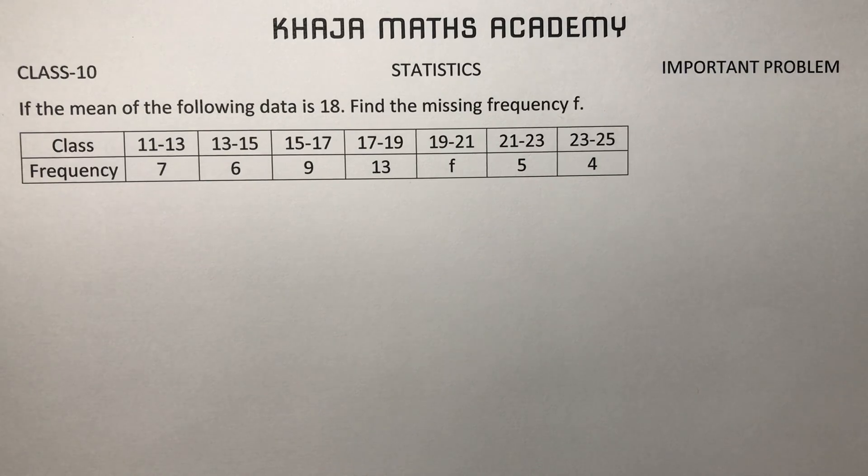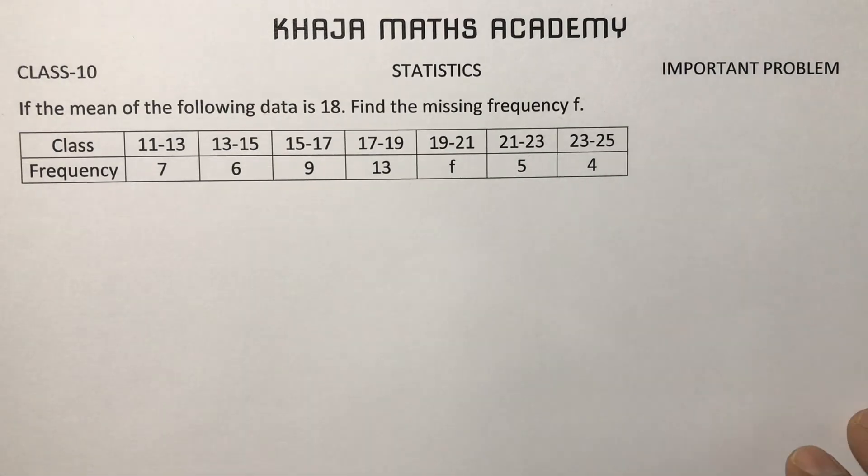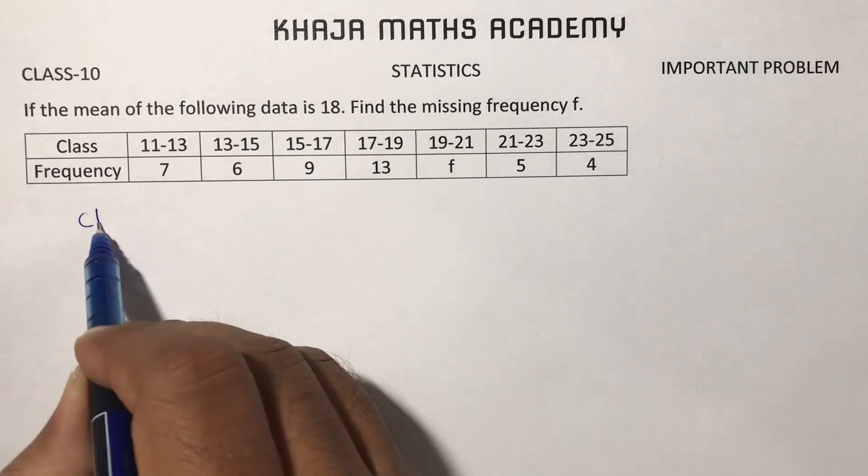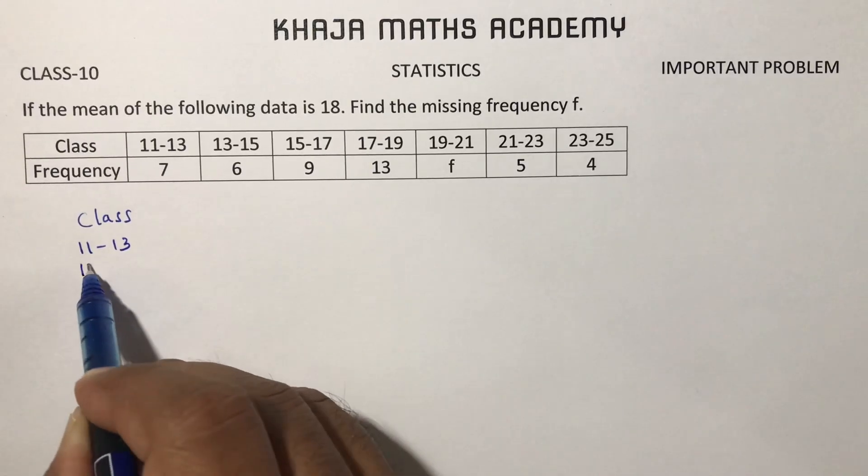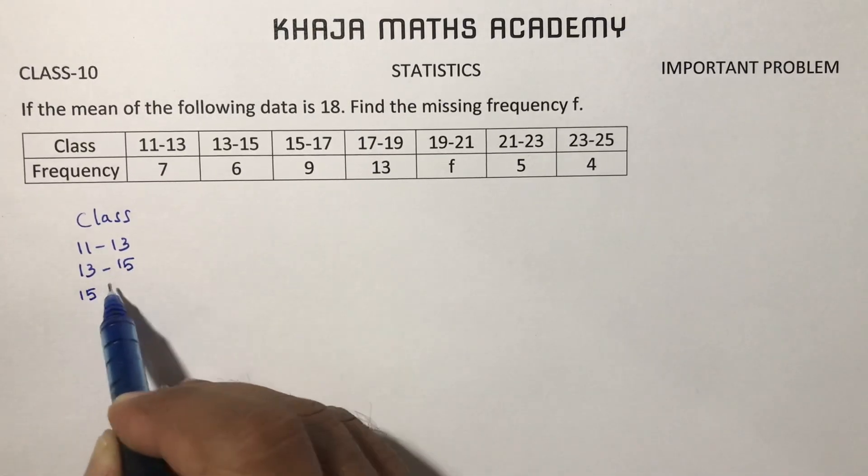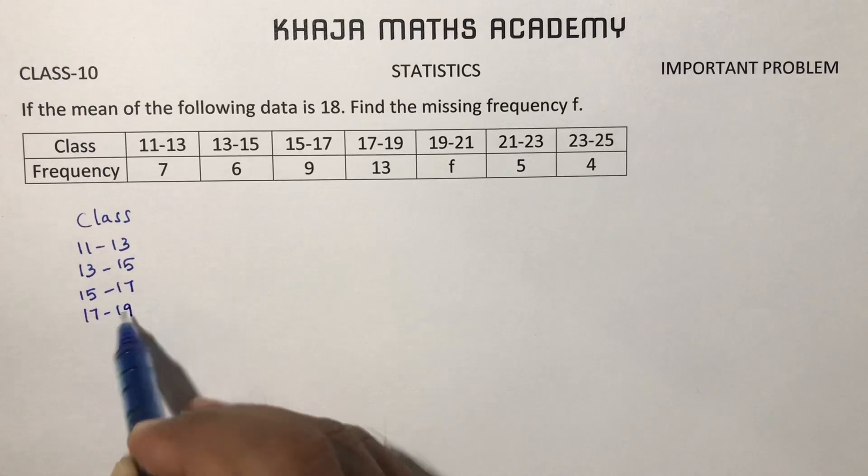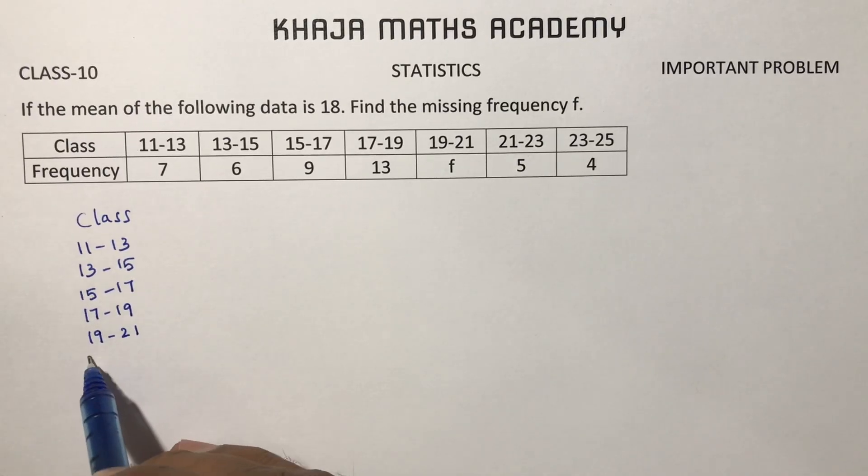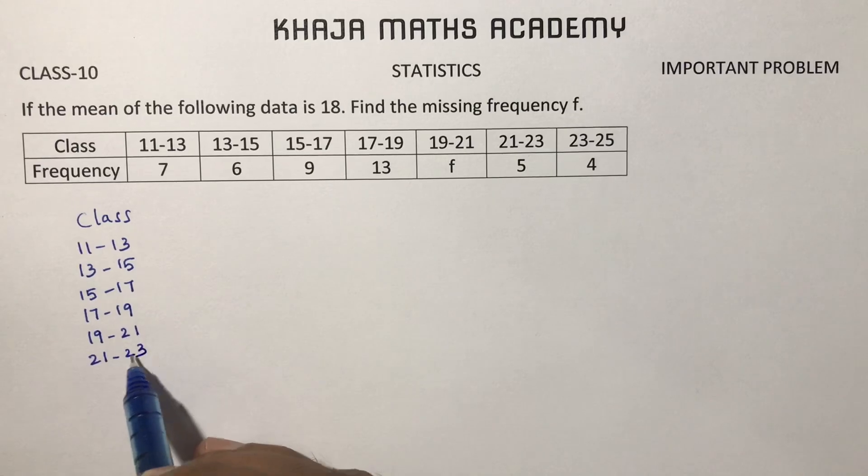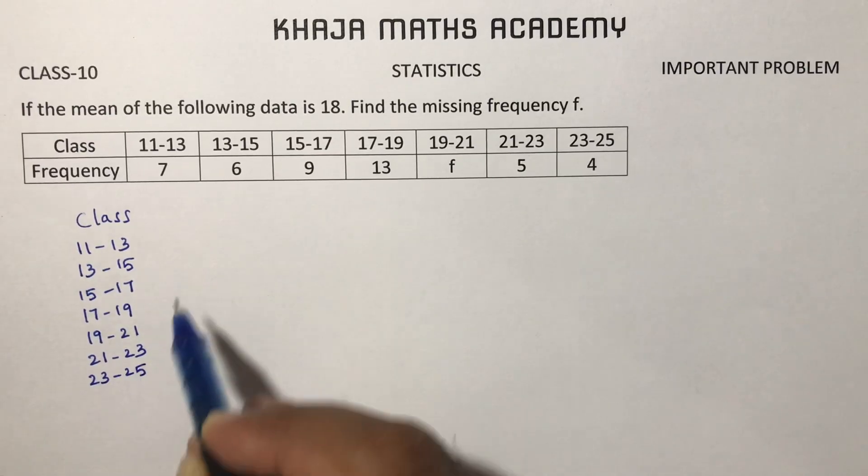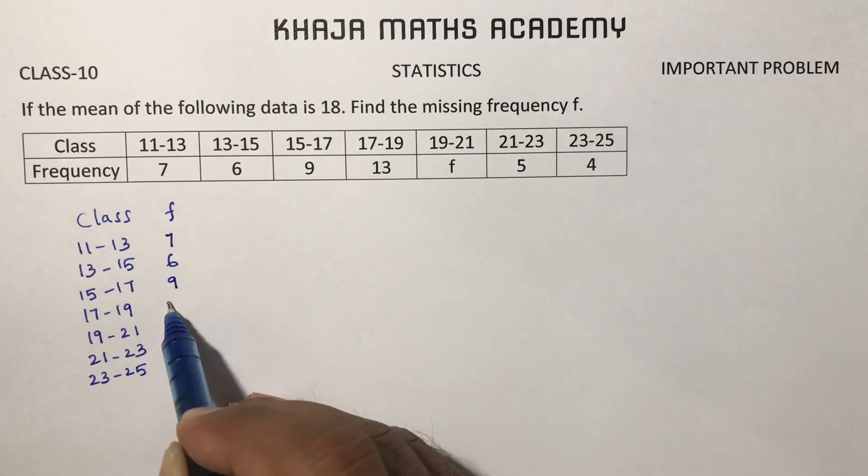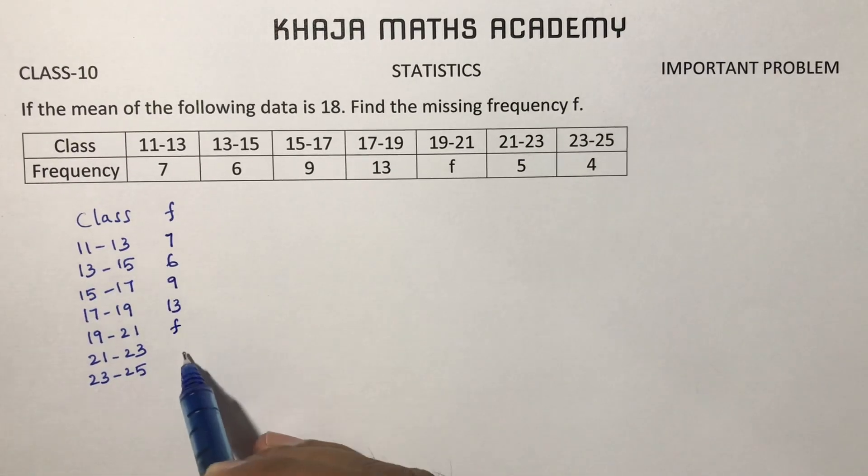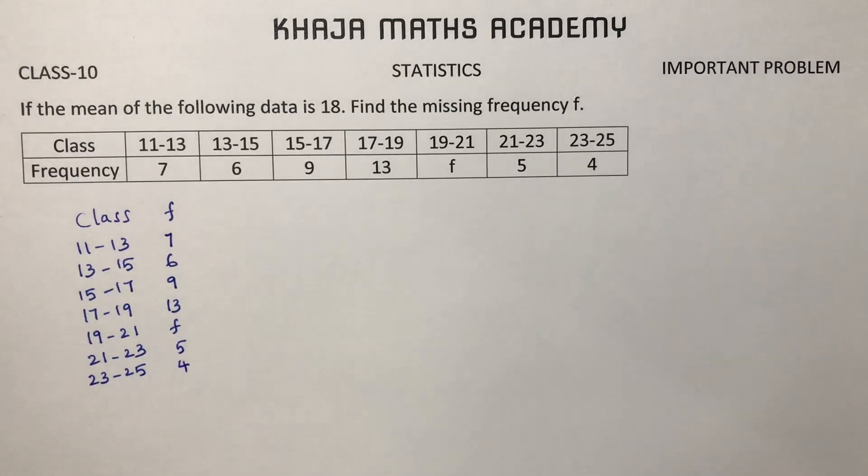Class 10th problem from statistics. If the mean of the following data is 18, find the missing frequency F. Here they give class 11 to 13, 13 to 15, 15 to 17, 17 to 19, 19 to 21, 21 to 23, 23 to 25, and frequency is 7, 6, 9, 13, F, 5, 4. We need to find the missing frequency F.